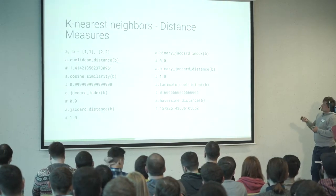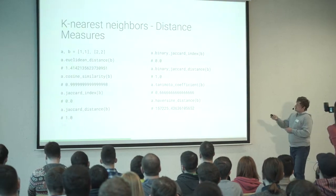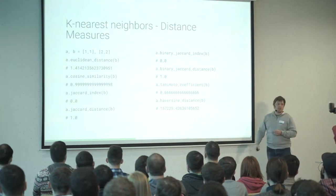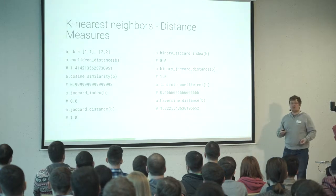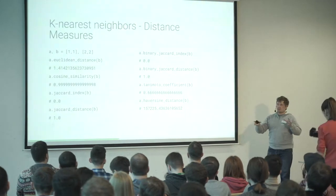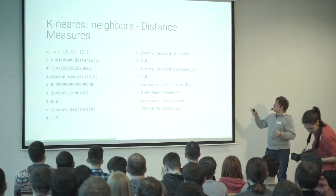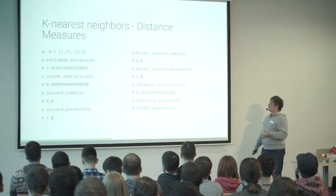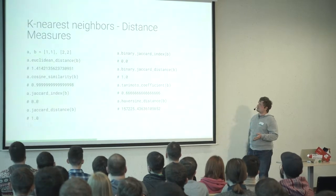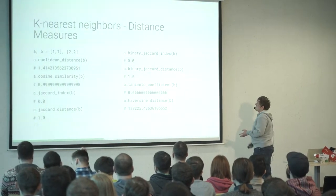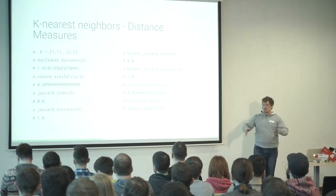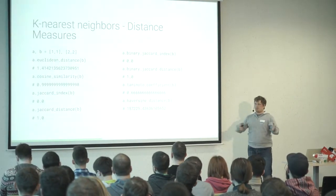For distance calculation, this gem uses a special gem called 'distance measures.' By default it uses Euclidean distance, but you can also use cosine similarity, Jaccard distance, or anything else — because, for example, you might be working not on a square geometry but something else.